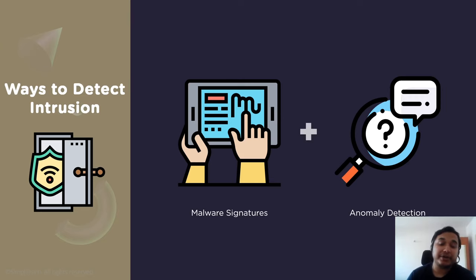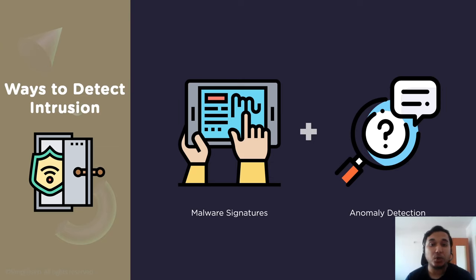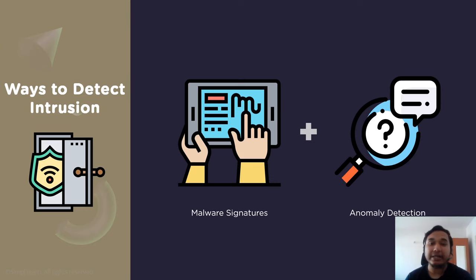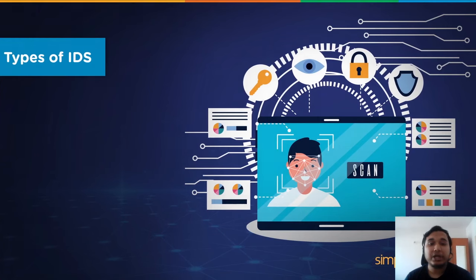Combining both methods gives you hybrid intrusion detection, which uses signature-based and anomaly-based detection to increase the scope of your IDS, enabling you to identify as many threats as possible. A comprehensive IDS can also understand evasion techniques cyber criminals use to trick an IDS into thinking there's no attack taking place, such as fragmentation, low bandwidth attacks, pattern changes, and many more.